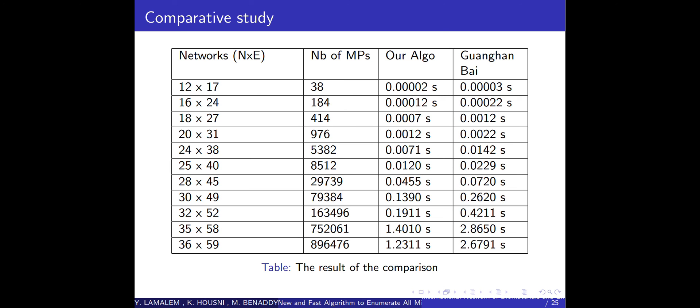As you can see here, our algorithm is two times faster than the Ganggan Bay algorithm because our algorithm is starting from the source node S and the sink node T at the same time.